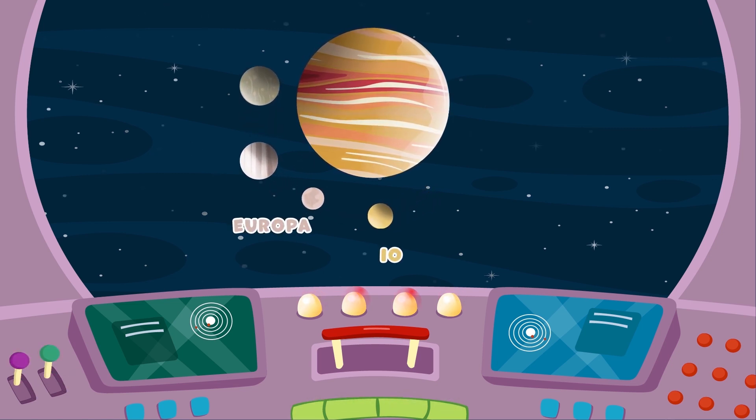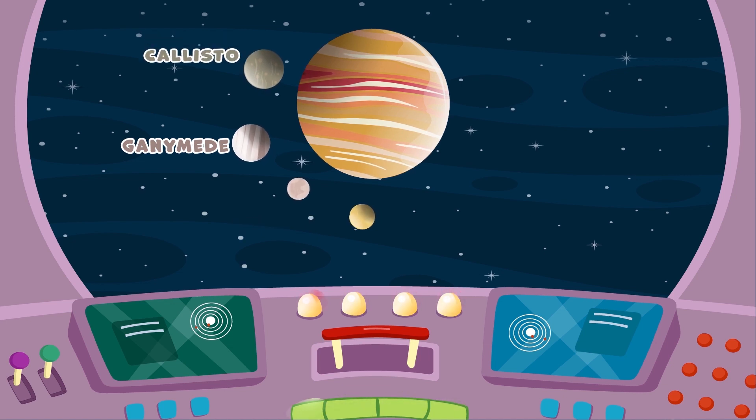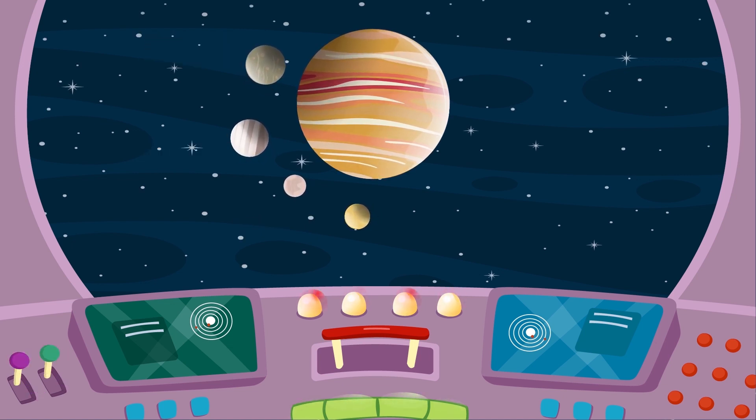Io, Europa, Ganymede, and Callisto. A day on Jupiter lasts around 10 hours.